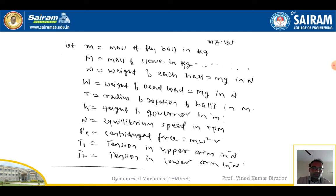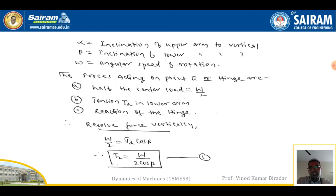Alpha is the inclination angle of the upper arm to the axis of the shaft. Beta is the inclination angle of the lower arm to the vertical. Note: small w is the weight of the ball, ω (omega) is the angular speed of rotation, and capital W is the weight of the sleeve — do not confuse these.